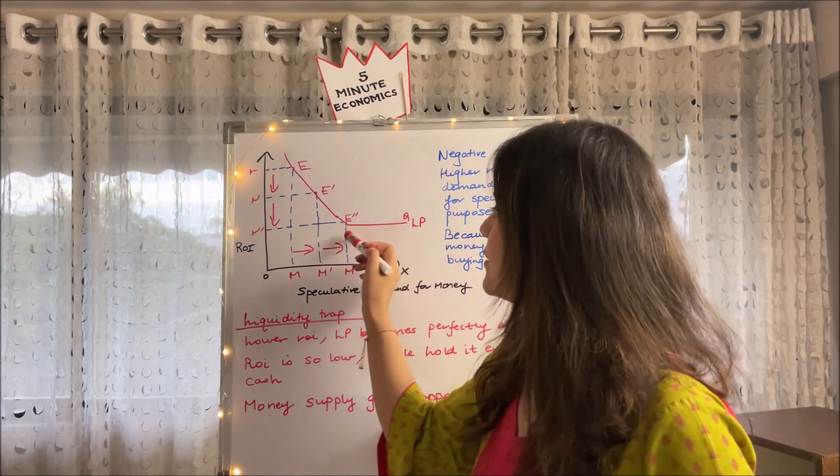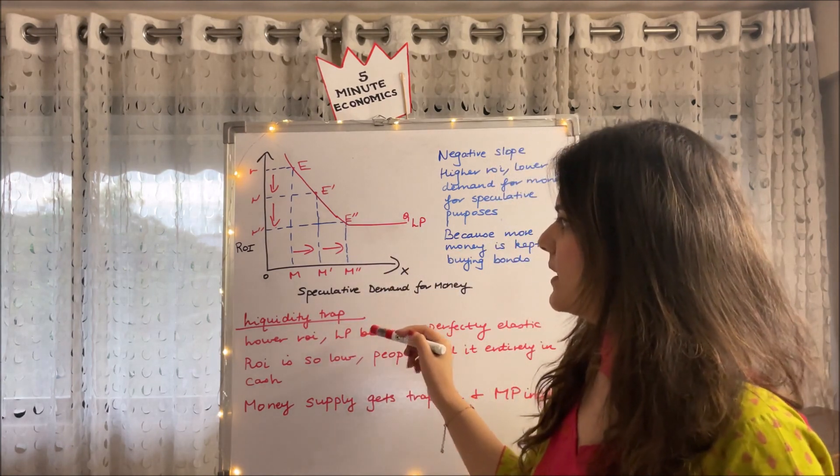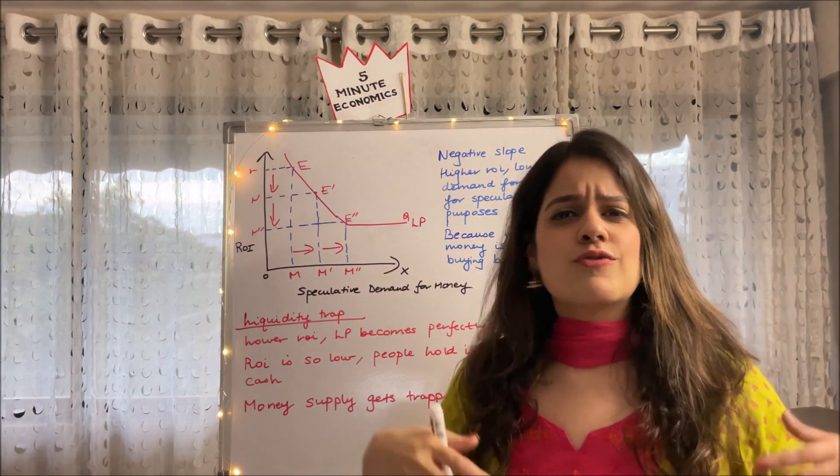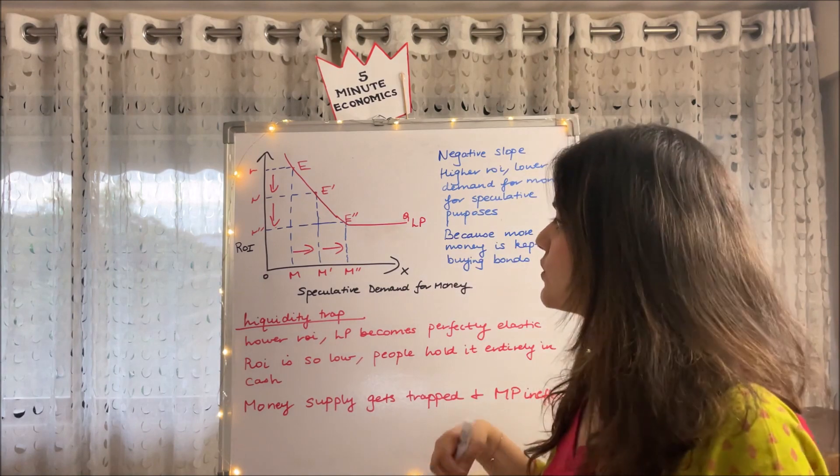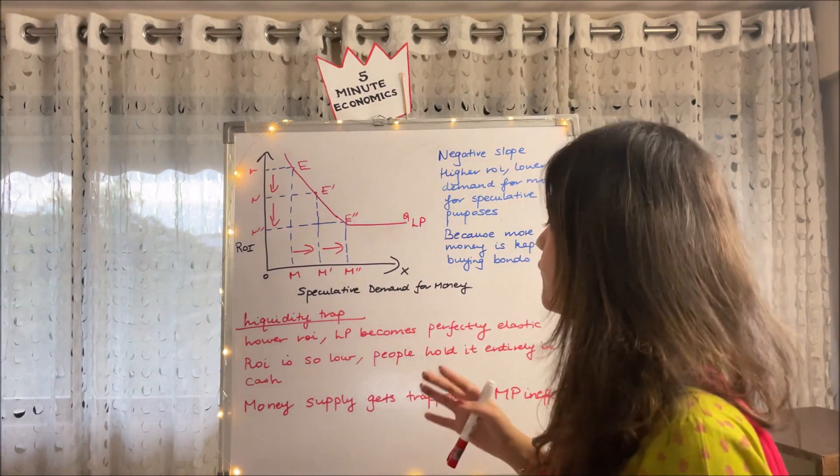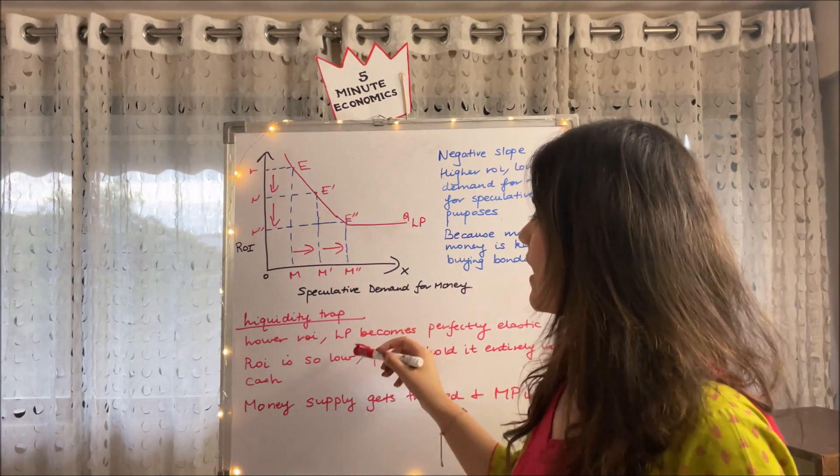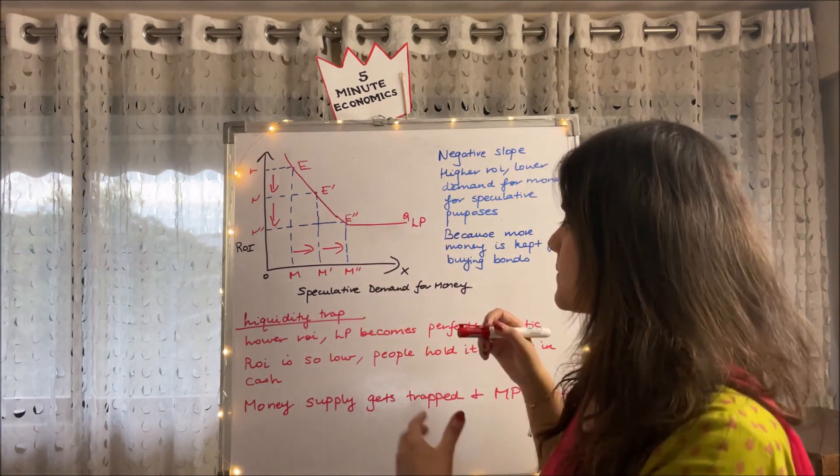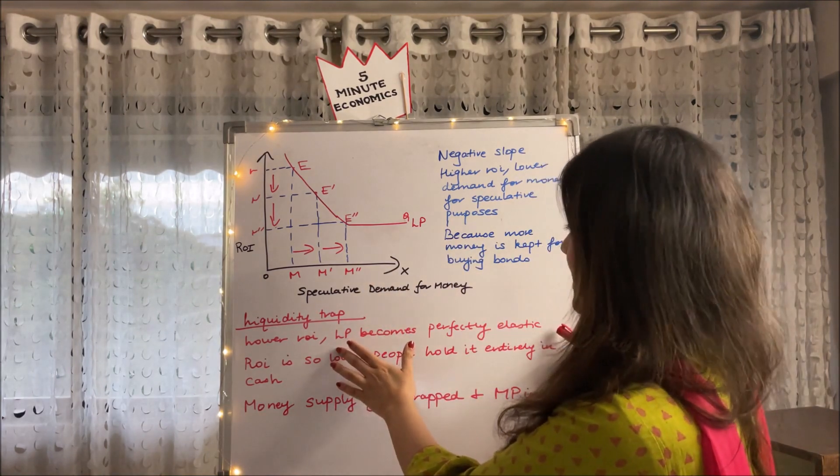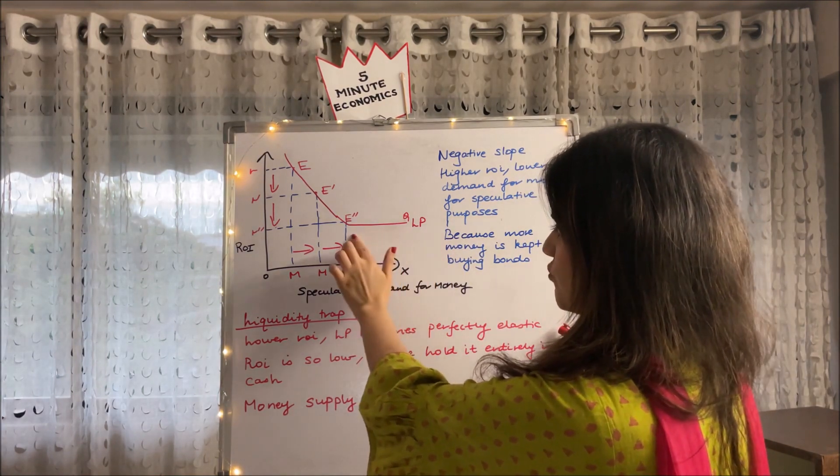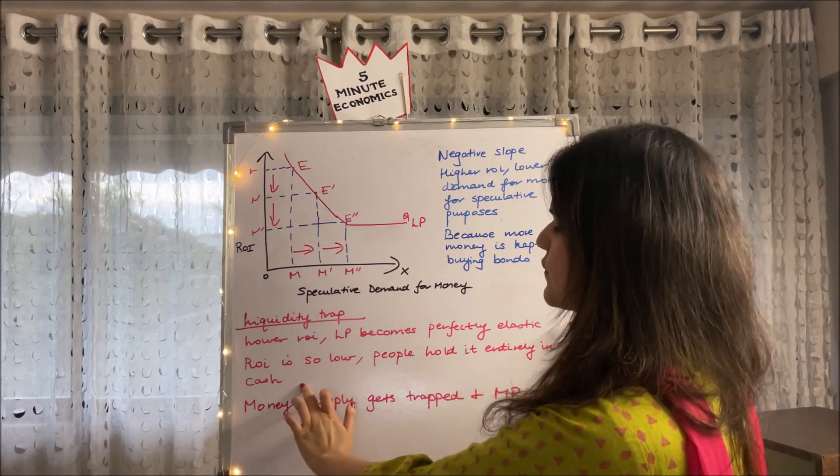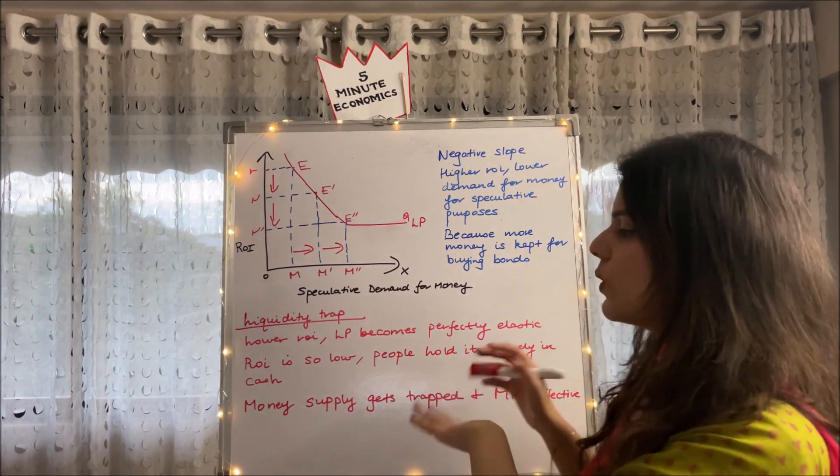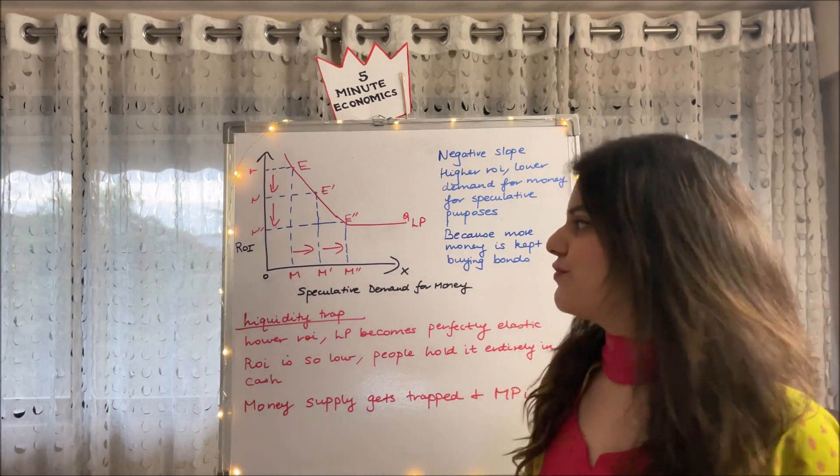This is the situation of a liquidity trap which I have explained it over here. Here the rate of interest has fallen so low that now people don't expect it to even fall. People think that at this point of time it becomes perfectly elastic. Our LP curve is a straight line if you can see.